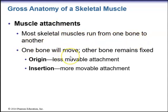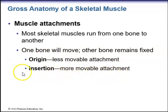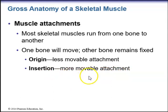The less movable attachment is known as the muscle's origin, while the insertion is the more movable attachment. The skeletal muscle inserts onto a bone that moves more than the origin. So the origin is the less movable attachment and the insertion is the more movable attachment.